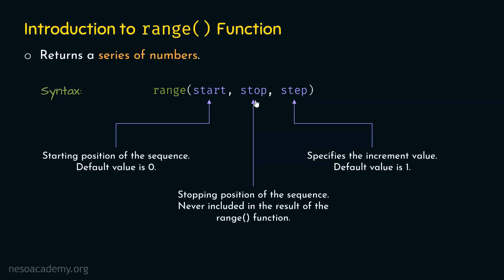The third argument is step, which specifies the increment value, and its default value is one, so this argument is optional. If start is zero, stop is five, and step is one, we get the normal sequence: zero, one, two, three, and four. But if step is two, the first value is zero, then two (zero plus two), then four (two plus two), giving us zero, two, and four. The range function returns a series of numbers based on its arguments.